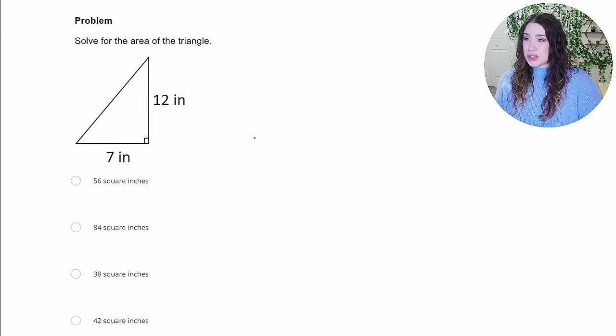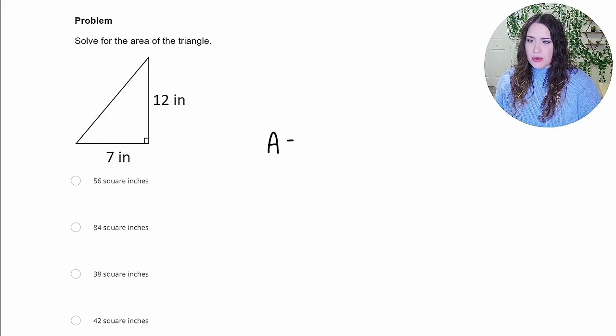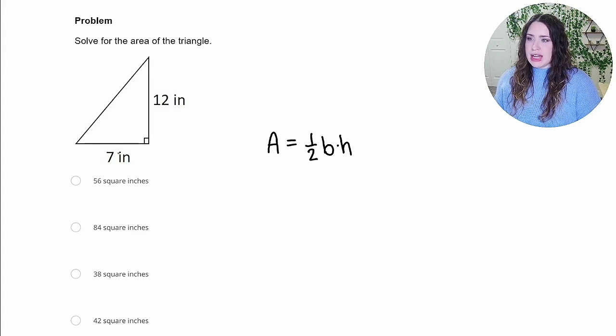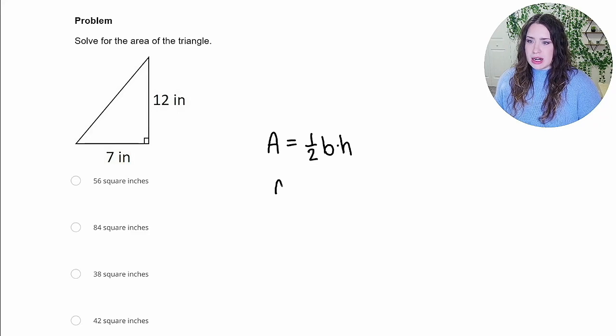All right. So this question wants us to solve for the area of the triangle. So it's going to be helpful to know that the area of a triangle is 1 half the base times the height. Or sometimes you might hear it as base times height divided by 2. So all we need to do is go ahead and plug in the 7 and the 12, which are our base and our height, and evaluate.